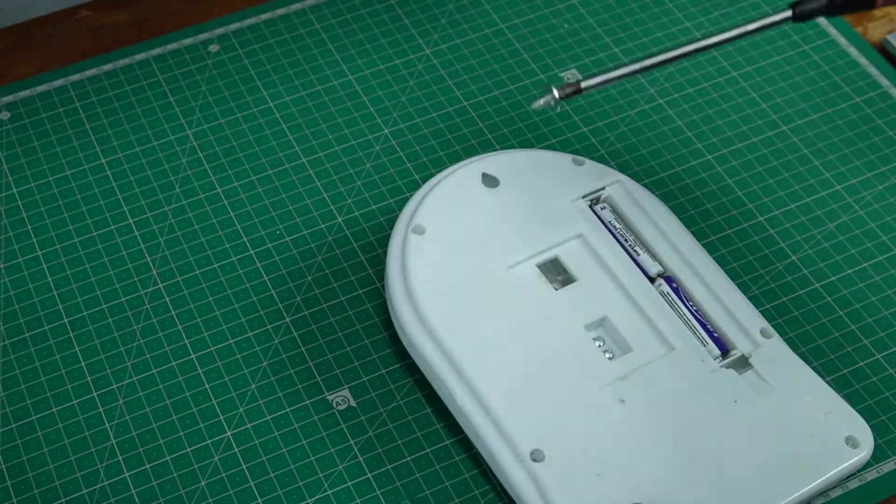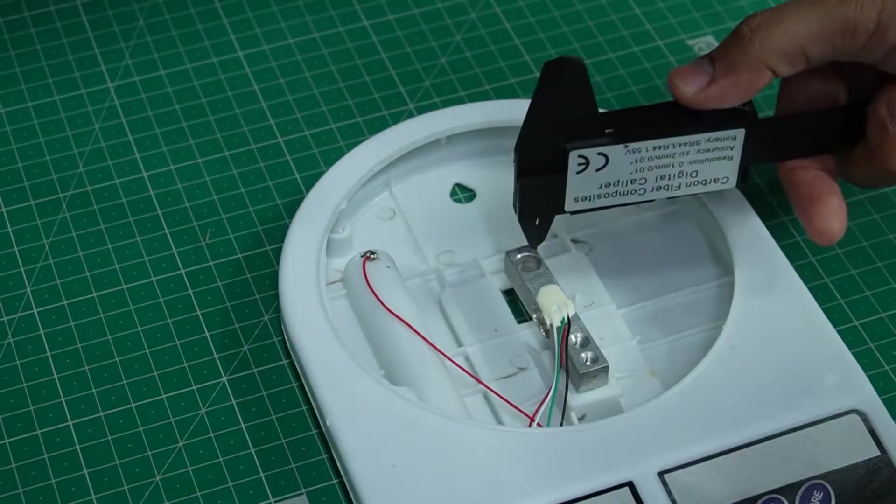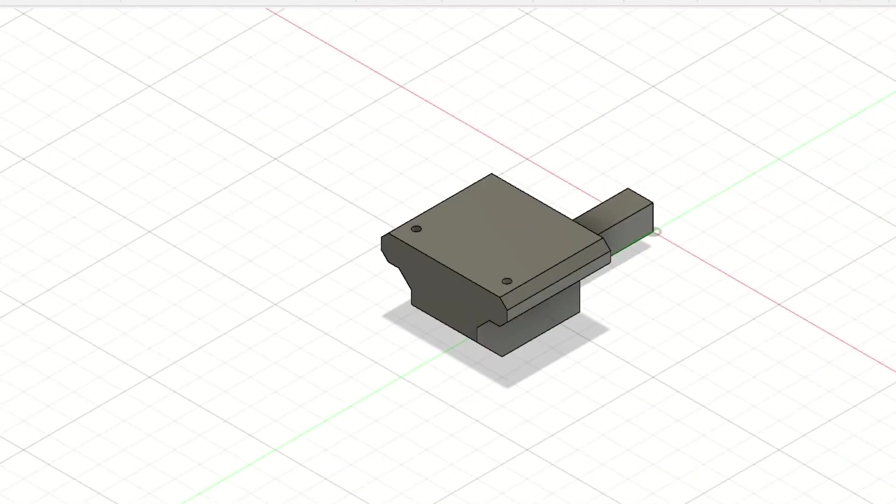I started by taking apart the weight scale and measuring the load cell's dimensions. From there I designed a custom mounting CAD and 3D printed it to hold the motors.